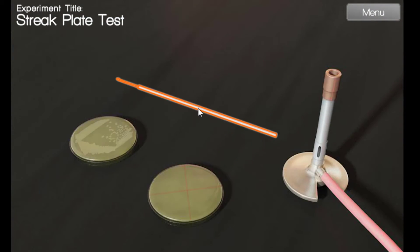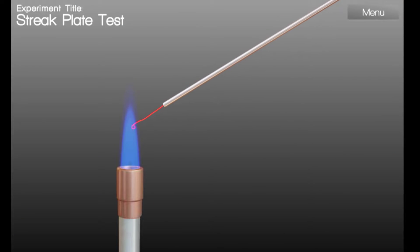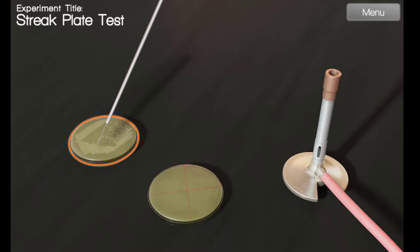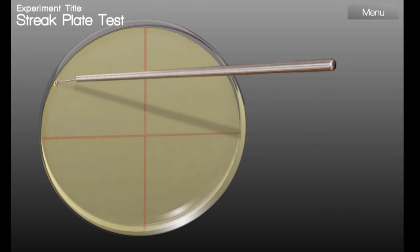Let's look at the steps of our procedure. First, we are going to sterilize the loop in the flame and allow it to cool. Then, pick an isolated colony from the agar plate and spread it over our new agar plate in one of the quadrants only.